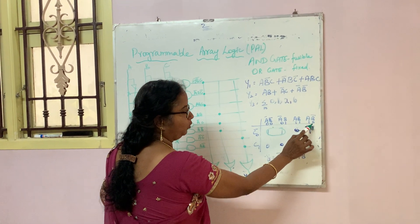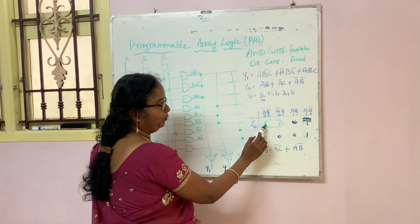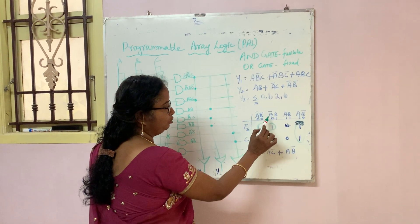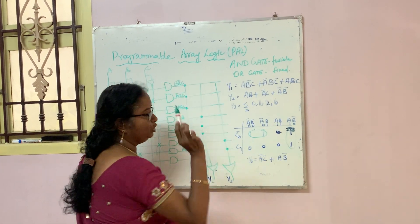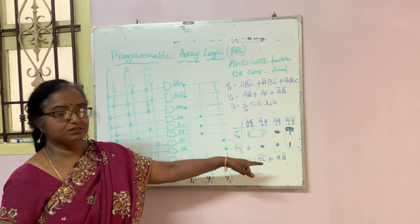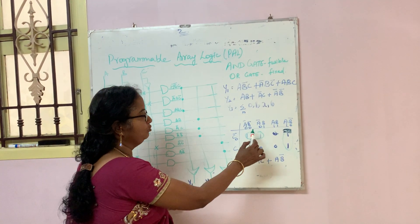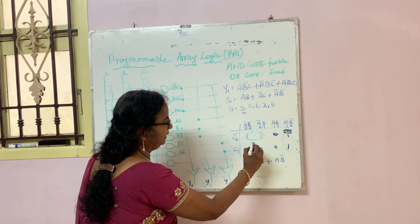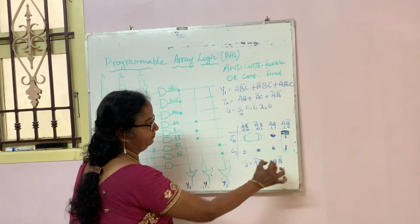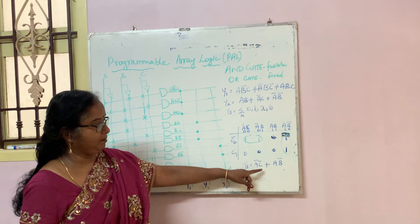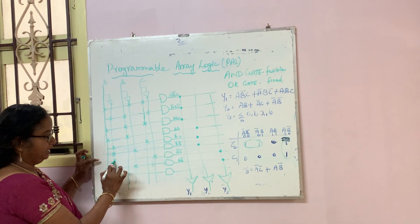In the K-map, the columns are labeled 0,0 - 0,1 - 1,1 - 1,0 and the rows are 0 and 1. Minterm 0 (A=0,B=0,C=0) is 1. Minterm 1 (A=0,B=0,C=1) is 1. Minterm 2 (A=0,B=1,C=0) is 1. Minterm 6 (A=1,B=1,C=0) is 1. Reducing this K-map gives us Y3 equal to A bar, C bar plus A, B bar.